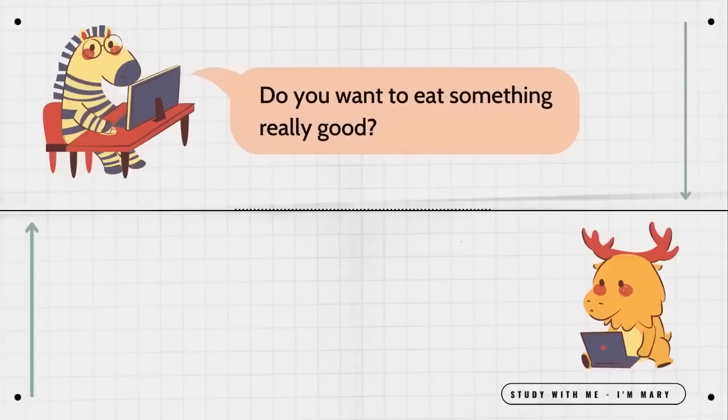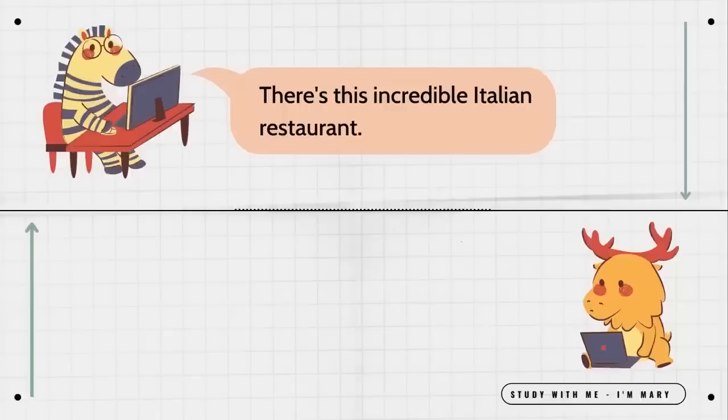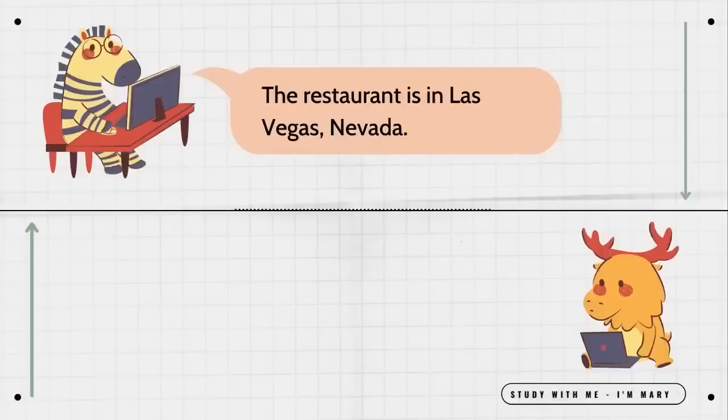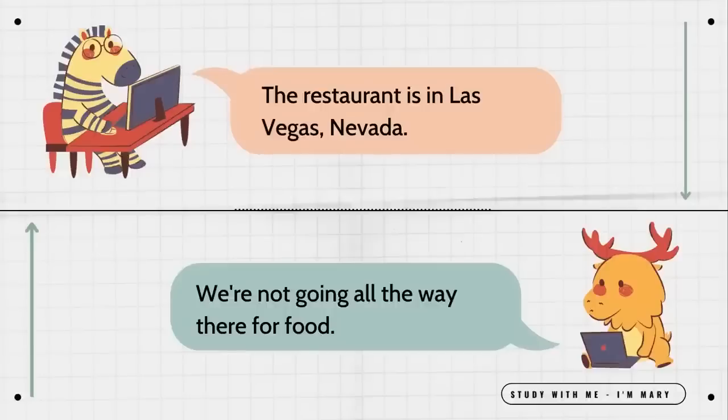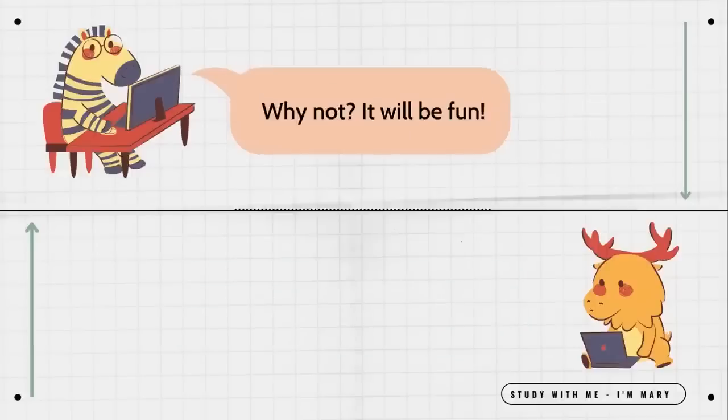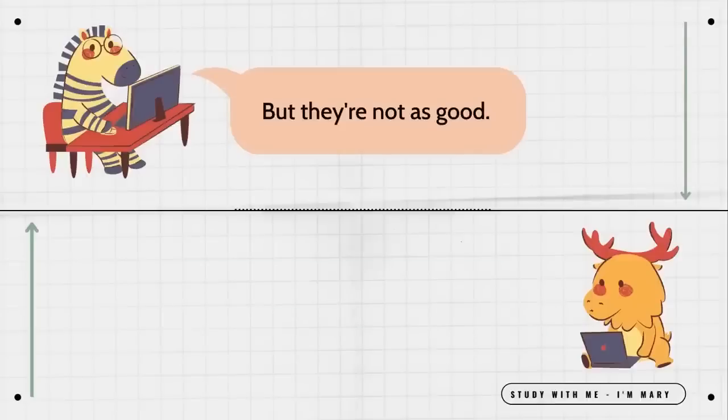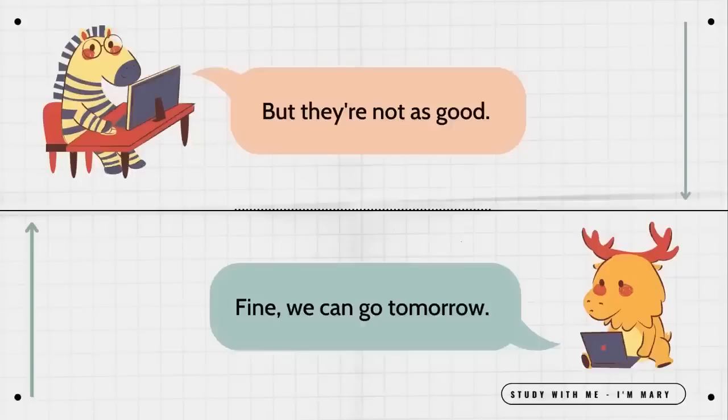Do you want to eat something really good? Yeah, of course. There's this incredible Italian restaurant. Okay, let's go now. We'll get there in four hours. Are you joking? The restaurant is in Las Vegas, Nevada. We're not going all the way there for food. Why not? It will be fun. There are a lot of Italian restaurants here. But they are not as good. Fine. We can go tomorrow.